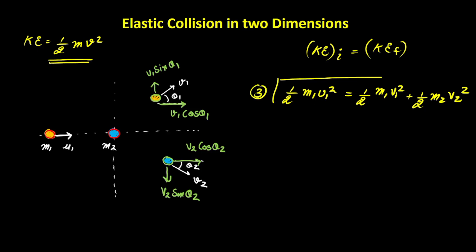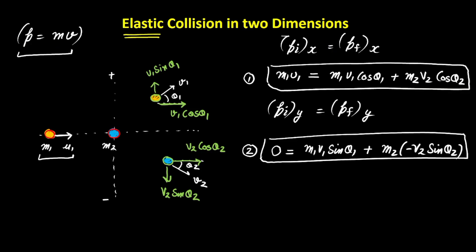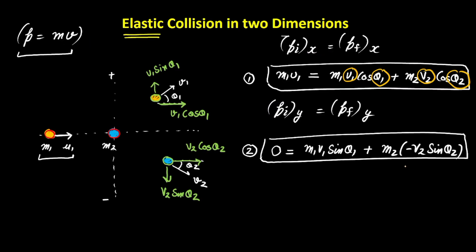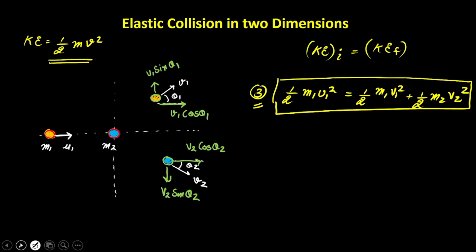In this situation, v1, v2, theta1, and theta2 are the four variables. These cannot all be determined from just the three equations we have — three equations with four unknowns. So if any one of these is given, for example theta1, you can use the three equations to find the remaining three variables. That's how you solve for elastic collision in two dimensions.